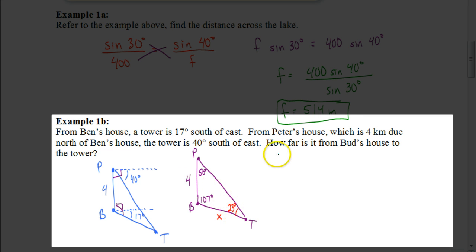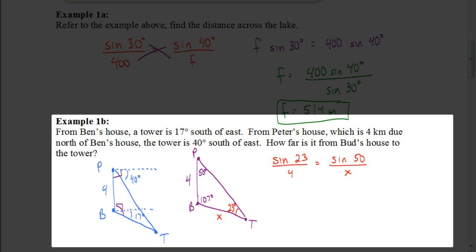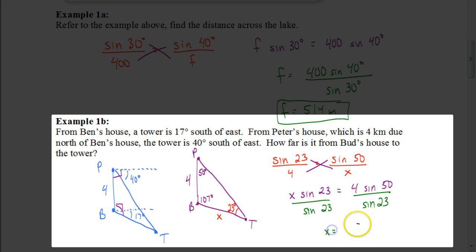With what I'm given — this angle and the side across from it — I can say the sine of 23 over 4 is proportional to the sine of 50 over x, since x is across from the 50-degree angle. Cross-multiplying: x times the sine of 23 equals 4 times the sine of 50. Make sure your calculator is in degree mode. Dividing both sides by the sine of 23, we take 4 times the sine of 50 divided by the sine of 23, and you should end up getting 7.8 kilometers. So Ben would be 7.8 kilometers from the tower.